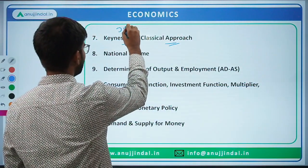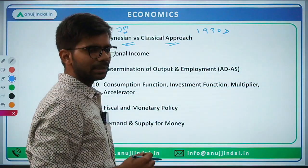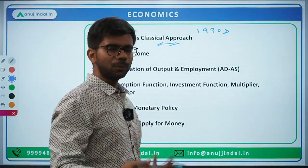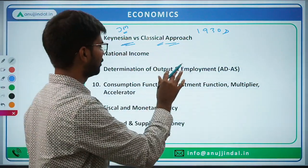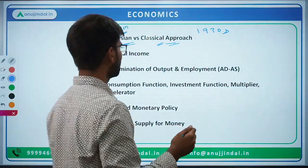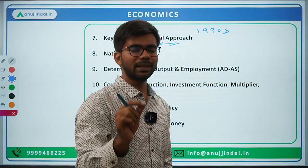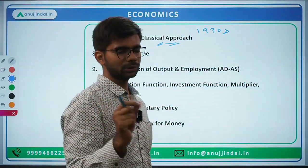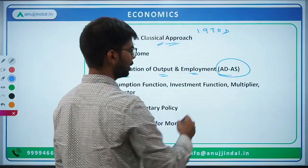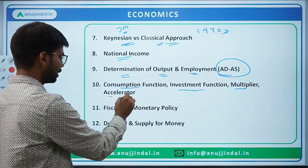Classical economics versus Keynesian economics — in the 1930s, the Great Depression revealed shortcomings in classical economics, and Keynesian economics was an improvement. The difference between the two approaches to determining national income is important. Different metrics: GDP, GNP, NNP — factor cost versus market price. Then determination of output and employment through Aggregate Demand (AD) and Aggregate Supply (AS) — very very important. Then consumption function, investment function, the multiplier and accelerator concepts.